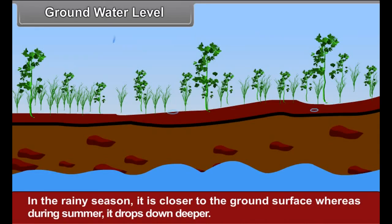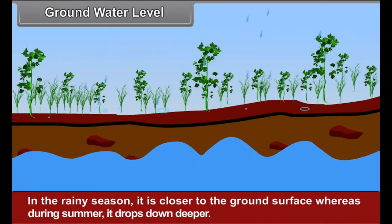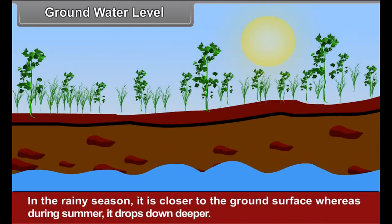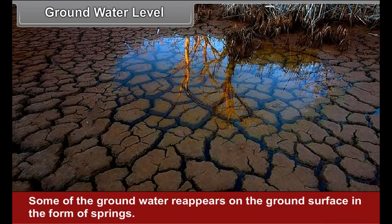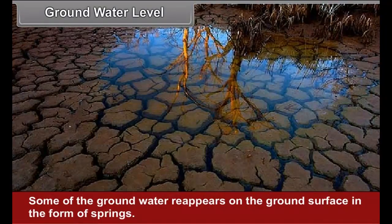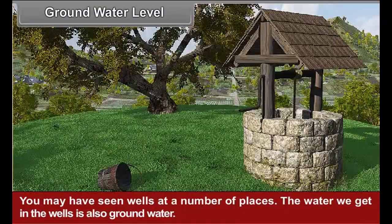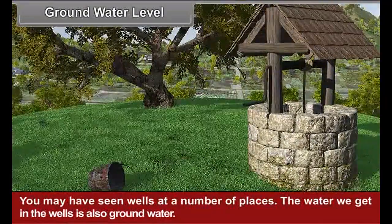In the rainy season, the groundwater level is closer to the ground surface, whereas during summer, it drops down deeper. Some of the groundwater reappears on the ground surface in the form of springs. You may have seen wells at a number of places. The water we get in wells is also groundwater.